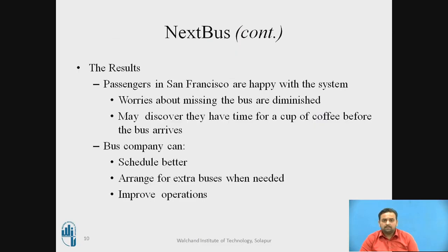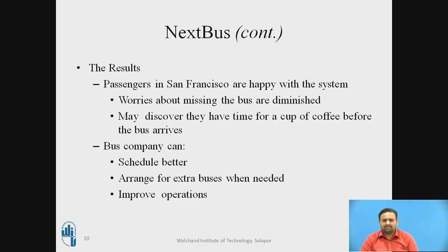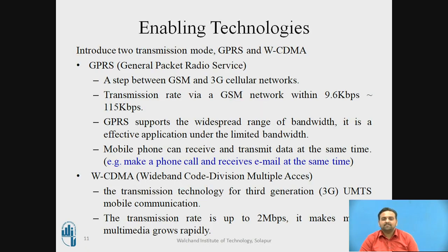Passengers don't have to worry — they can discover they have time for a cup of coffee before the bus arrives, schedule better, and arrange extra buses when needed since they're not dependent on any one bus. This technique is enabled via transmission modes: GPRS, which is a step between GSM and 3G cellular networks supporting a widespread range of bandwidth; and WCDMA (Wideband Code Division Multiple Access), a transmission technology for third-generation networks with rates up to 2 Mbps, making multimedia grow very rapidly.